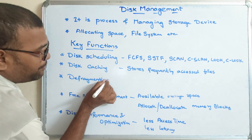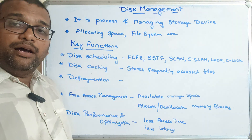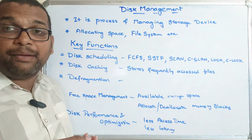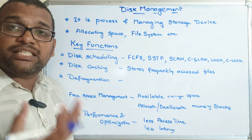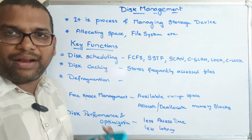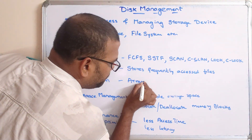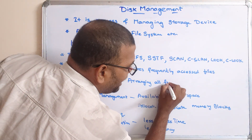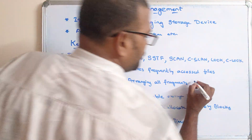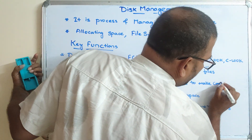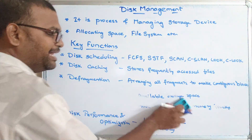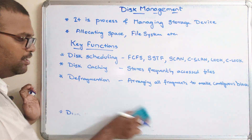The next function is defragmentation. When allocating files to memory, we face problems like fragmentation - internal fragmentation and external fragmentation. Defragmentation is the process of arranging all fragments, meaning unused blocks of memory, to make contiguous blocks. So fragmentation and defragmentation are handled here under disk management.